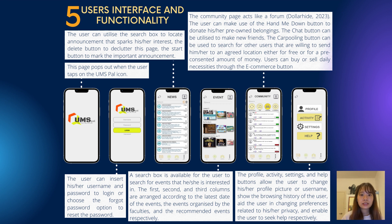Now I'm going to talk about the user interface and functionality. Users can utilize the search box to locate announcements that match their interest, use the delete button to dismiss announcements, and use the star button to mark important announcements. A search box is also available for users to search for events they are interested in. The first, second and third columns are arranged according to the latest date of the events, the events organized by the faculties, and the recommended events respectively.